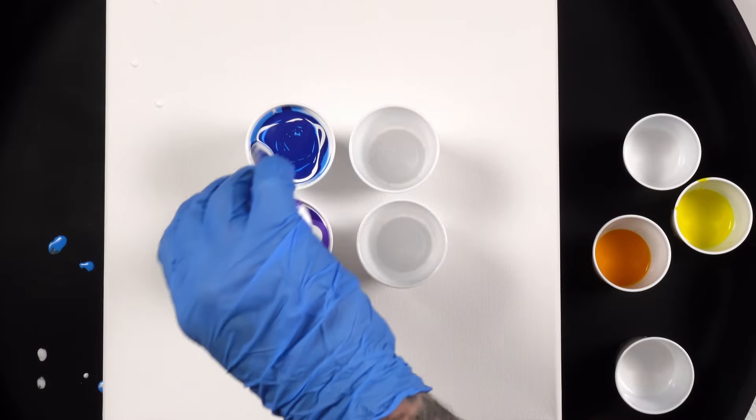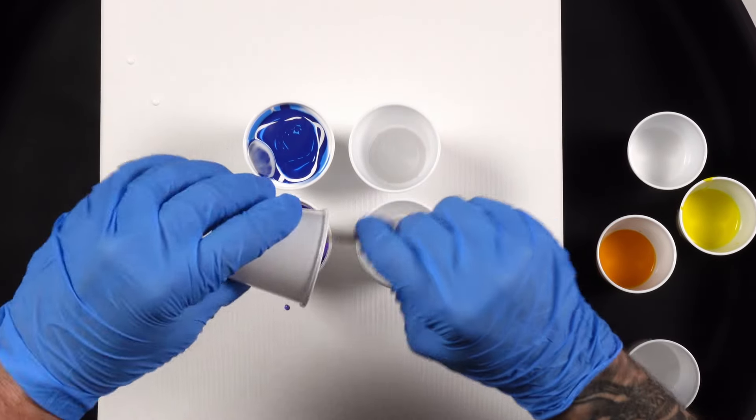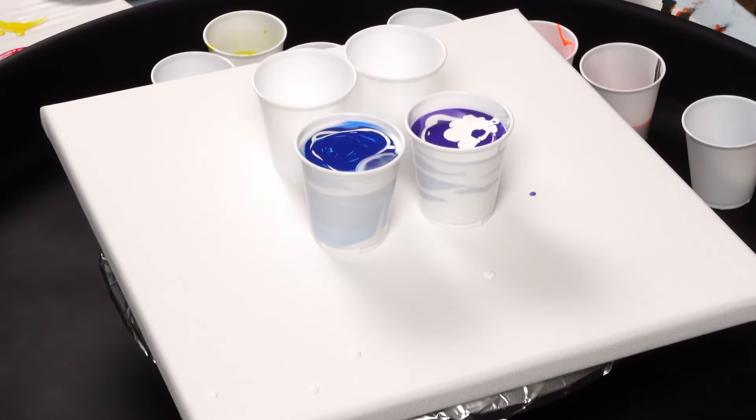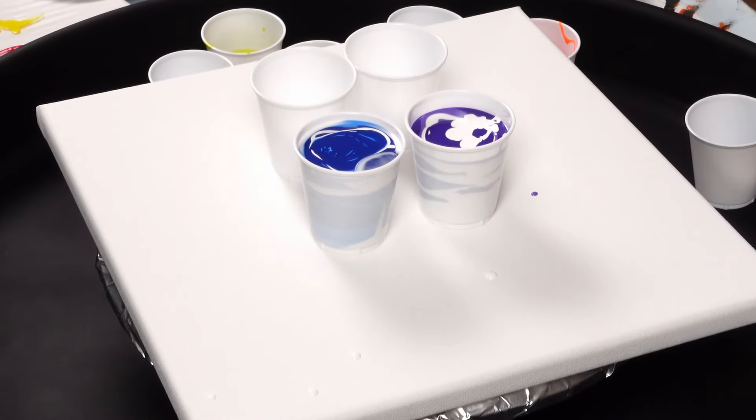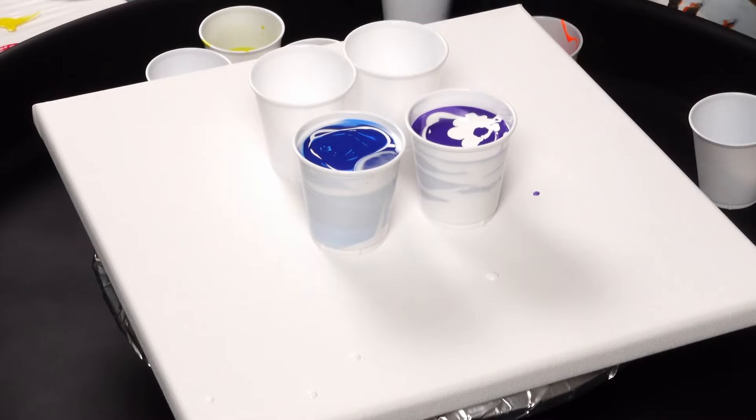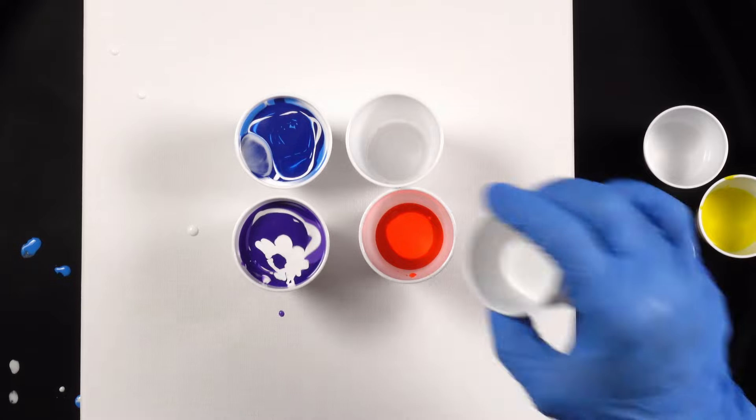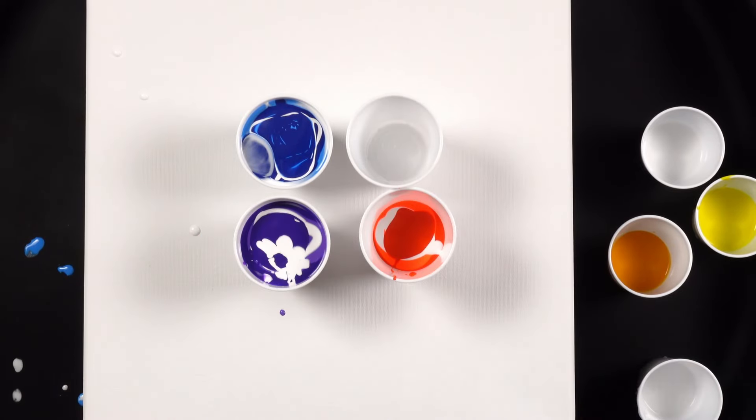The whole idea of this pour is kind of, I don't know if it's gonna work, okay? So I'm gonna layer these colors in their own cups and they're gonna have quadrants. It's gonna be like four different flip cups in the center. There's no silicone mixed in any of these colors at all.